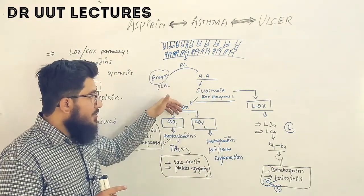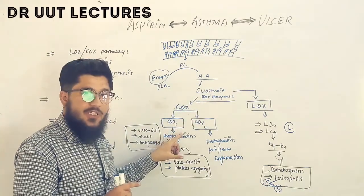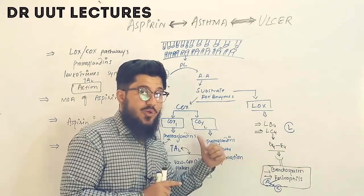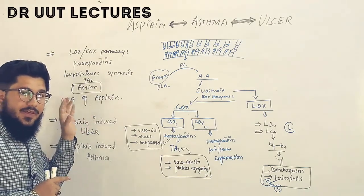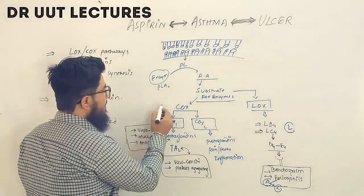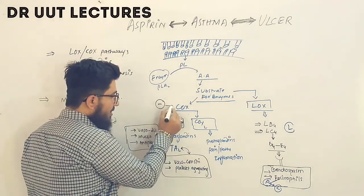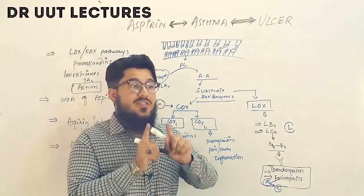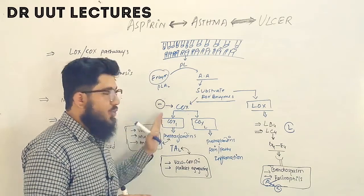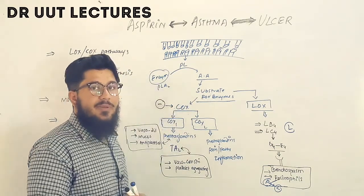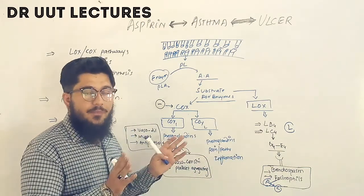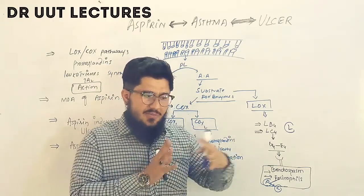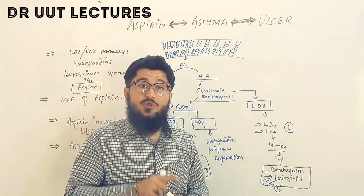Now let's move to the mechanism of action of aspirin. When you take aspirin, it targets and inhibits the COX enzyme. One very important point: aspirin is a non-selective COX inhibitor, meaning it inhibits both COX-1 and COX-2. When both are inhibited, pain, fever, and inflammation are alleviated — which is why people take aspirin for these symptoms.